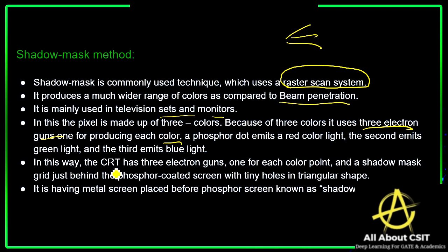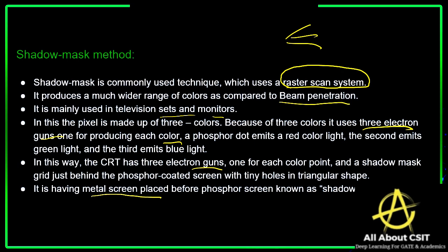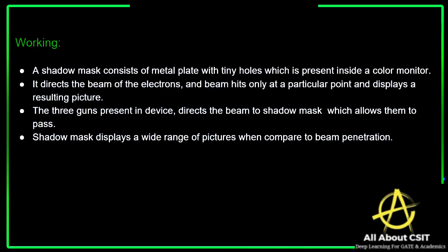The CRT has three electron guns — one for each color point — and a shadow mask grid just behind the phosphorous-coated screen with tiny holes in a triangular shape. The shadow mask has a metal screen placed before the phosphorous screen, and this metal screen is what is generally called the shadow mask.